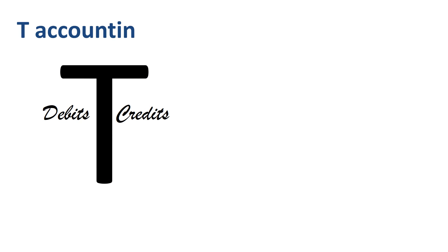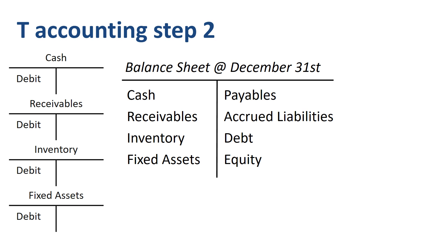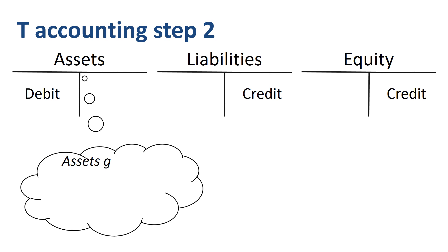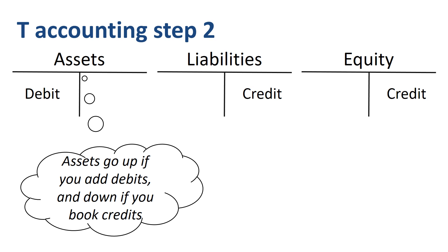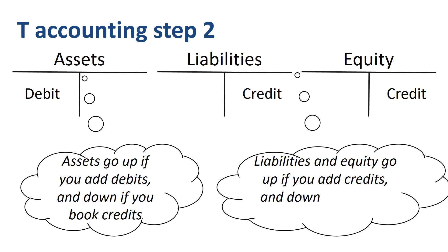T-accounting step 2. Take a look at this T-account and this balance sheet. Looks pretty similar, right? That's because it's the same basic idea: debits on the left, credits on the right. Asset accounts in their natural state have a debit balance. Liabilities and equity accounts in their natural state have a credit balance. You can think of a T-account as a mini balance sheet for one specific account in the ledger. Assets go up if you add debits, and down if you book credits. Liabilities and equity go up if you add credits, and down if you book debits.